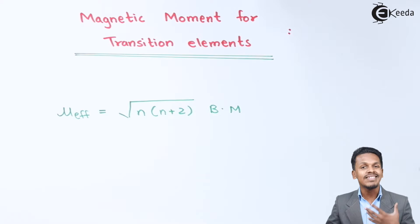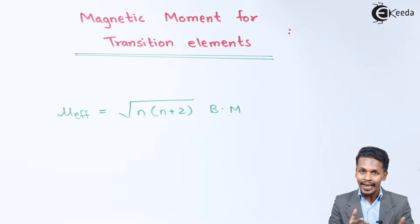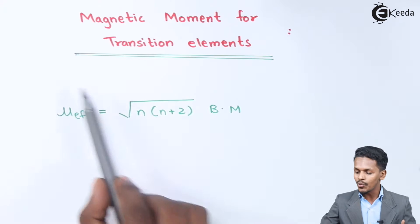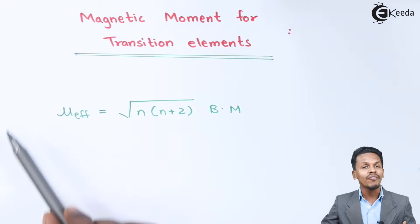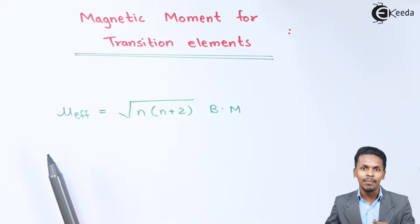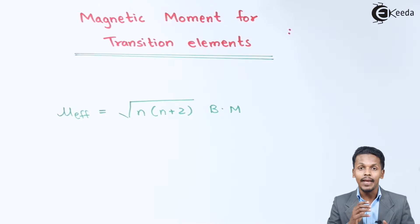In this formula, n represents the number of unpaired electrons. We can easily calculate the number of unpaired electrons of a particular ion or atom, and based on that we can also calculate the mu effective for that particular atom or ion. Let us now understand how we can calculate the magnetic moment for certain ions.